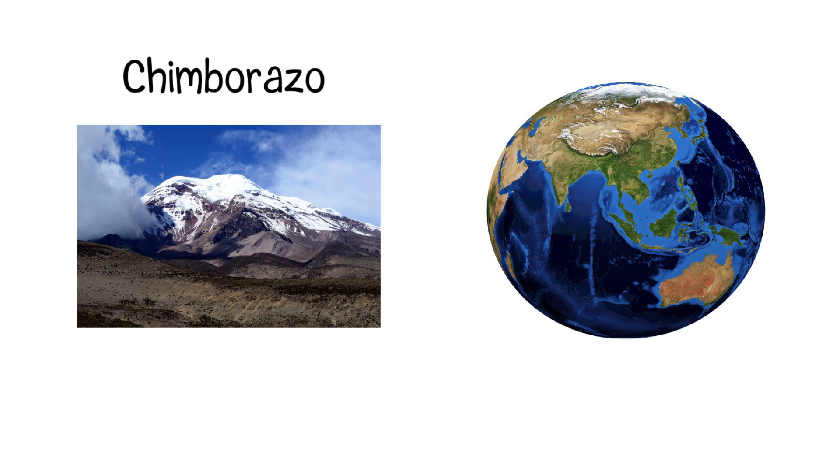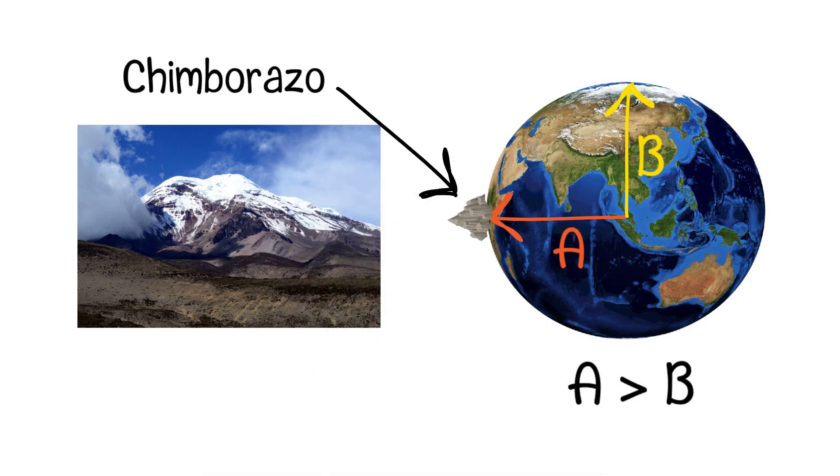Earth is not a perfect sphere, but rather an oblate spheroid, meaning it is slightly flattened at the poles and bulging at the equator due to its rotation. Chimborazo is located very close to the Earth's equator, which is where the planet's circumference is the greatest. The equatorial bulge results in the surface being farther from the Earth's center compared to locations at higher latitudes.